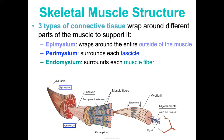If the effort is nearer to the fulcrum than the load, it creates a mechanical disadvantage — which can actually be beneficial too. There are three types of levers in the body. A first-class lever has the fulcrum between the effort and load — like a seesaw or scissors — and this is how the lever works when raising your head from your chest. A second-class lever has the load between the effort and fulcrum — like a wheelbarrow — and that's how standing on your toes works. A third-class lever has the effort between the load and fulcrum — like tweezers — and that's how the bicep curl lever system works. And that is the muscular system.